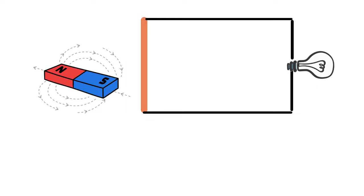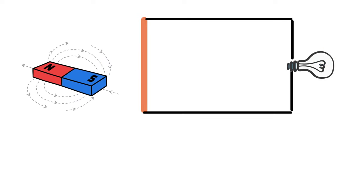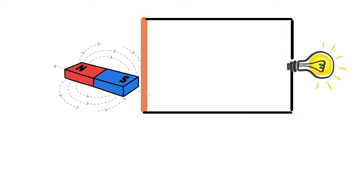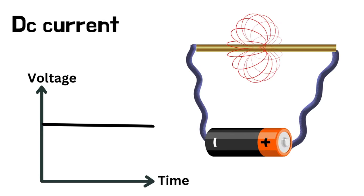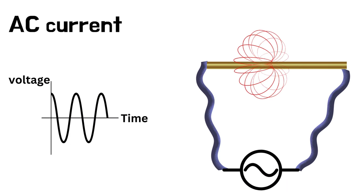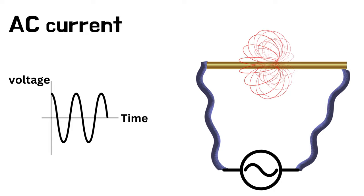But there is a problem here. DC current will form a magnetic field, but it remains constant. The AC current, however, produces a changing magnetic field, which is key.